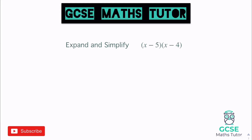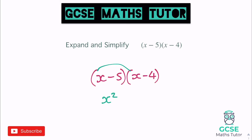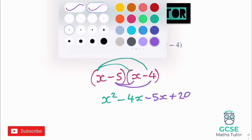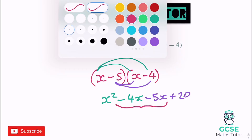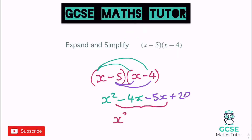One more before we have a go. We've got a double negative in both brackets: x minus 5 and x minus 4. Following the exact same process but being careful with the negatives. x times x is x squared again. x times negative 4 is negative 4x. Negative 5 times x is negative 5x. And negative 5 times negative 4 — 5 times 4 is 20, and negative times negative makes it positive — so positive 20. Tidying up the middle: negative 4 subtract another 5 is negative 9. So x squared minus 9x plus 20.